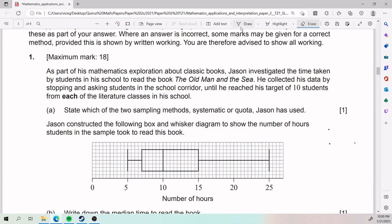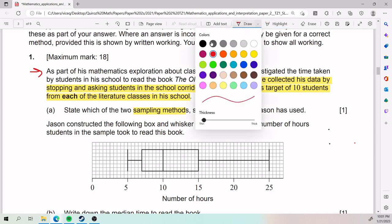All right, so for this first one, we have that as part of his mathematics exploration about classical books, Jason investigated the time taken by students in his school to read the book The Old Man in the Sea. They tell us he collected his data by stopping and asking students in the school corridor until he reached his target of 10 students from each of the literature classes in his school.